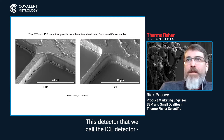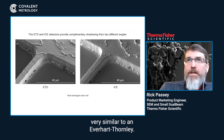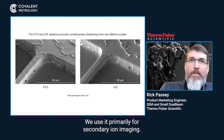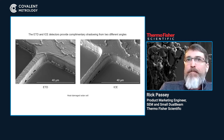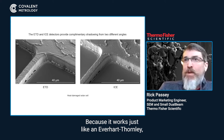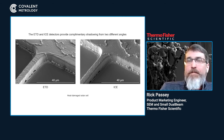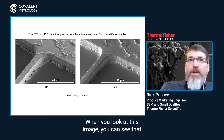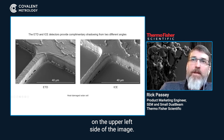The detector we call the ICE detector is a ThermoScientific detector, very specific to us, and very similar to an Everhart Thornley. We use it primarily for secondary ion imaging, but because it works just like an Everhart Thornley, we can use it as a complementary detector. Looking at this image, you can see that the shadowing mechanism on the ICE detector makes the upper left side of the image really bright.